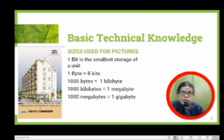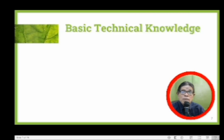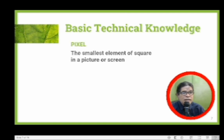It may not be just black — it may be colored. This is for storage purposes. When we say byte, it means storage in your computer or cell phone. But when it comes to pictures, we have another measurement: in terms of pixel. What is a pixel? It is the smallest element or square in a picture or screen. For instance, this is your smallest square.